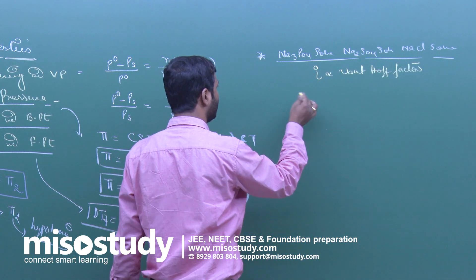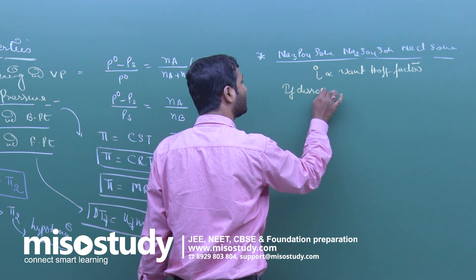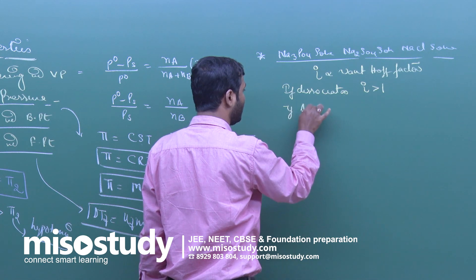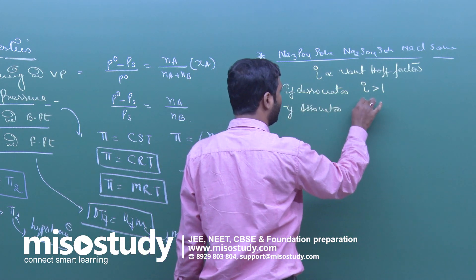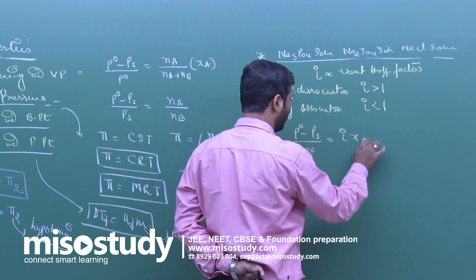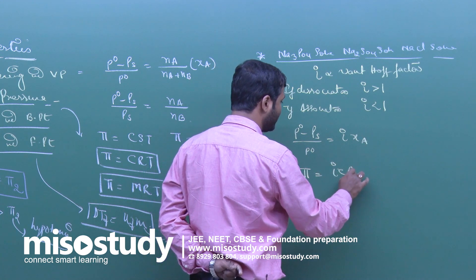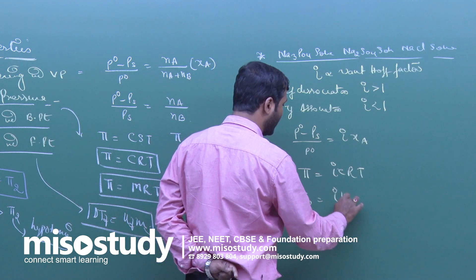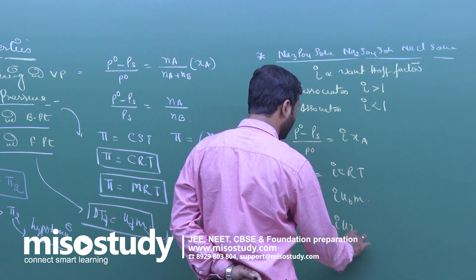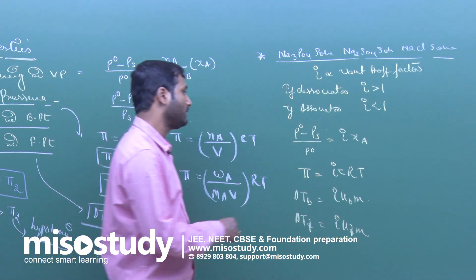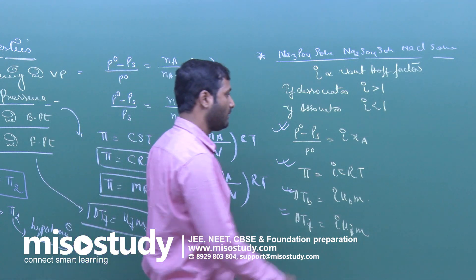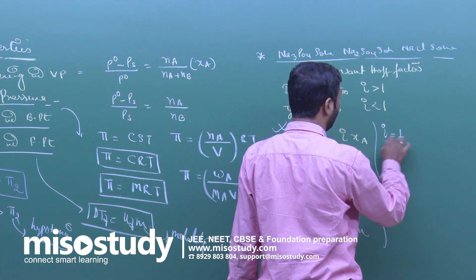In case of association or dissociation, we correct the colligative property by multiplying by i, which is called the Van't Hoff factor. If dissociation occurs, the value of i is greater than 1; if association occurs, i is less than 1. The corrected forms are: (P naught − P_s)/P naught = i × X_A; pi = iCRT; delta T_B = i × K_B × M; and delta T_F = i × K_F × M. For ideal solutions, i = 1.